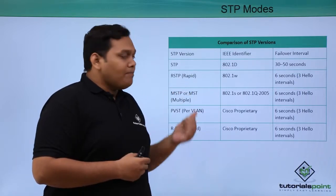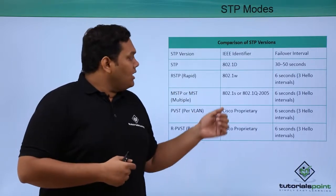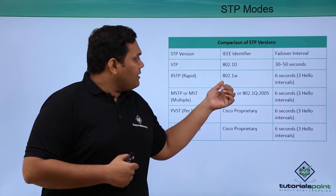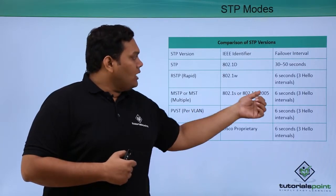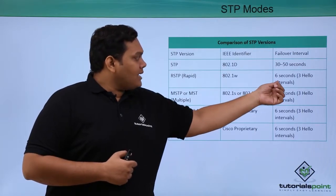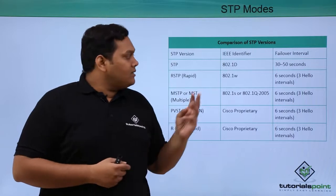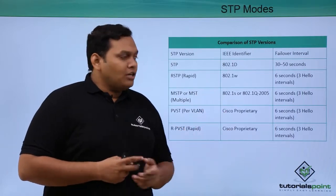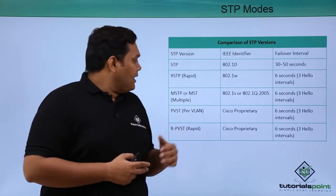RSTP, which is Rapid Spanning Tree Protocol, has the IEEE identifier 802.1w and a failover interval of 6 seconds, consisting of 3 hello packets at 2 seconds each.